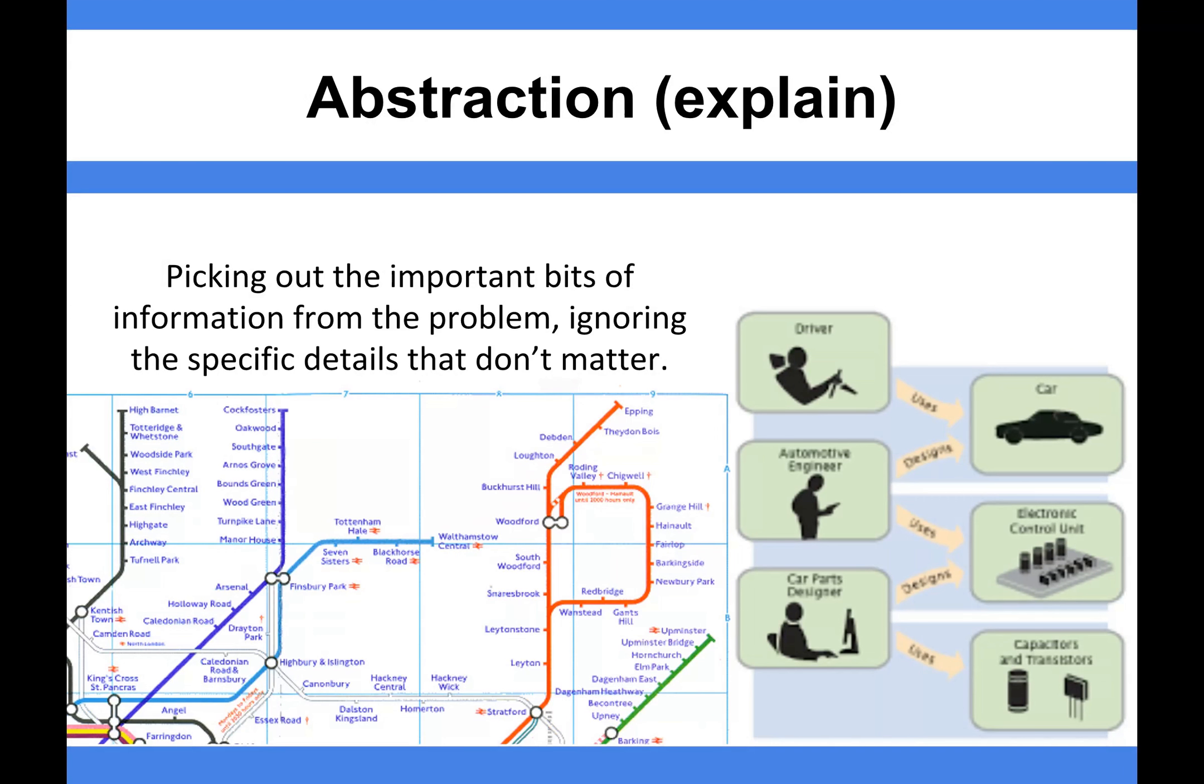Okay, so abstraction. This is basically where you pick out important bits of information from whatever the problem is you're doing and you ignore the things that don't matter. I think the best way to explain this is to go through some examples.